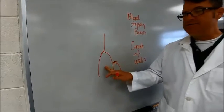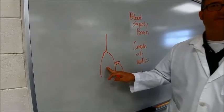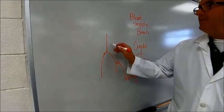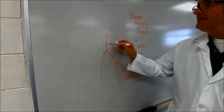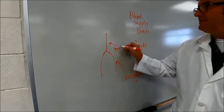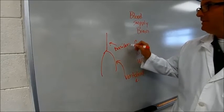Okay? There are two vertebrals. They come up through the transverse foramen in the neck, or foramina to be more exact. They form the basilar artery.